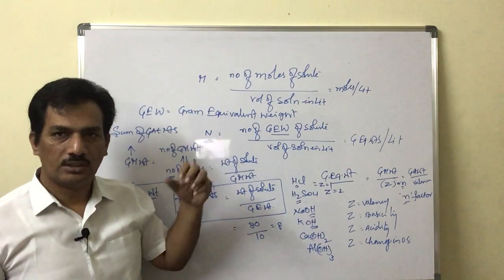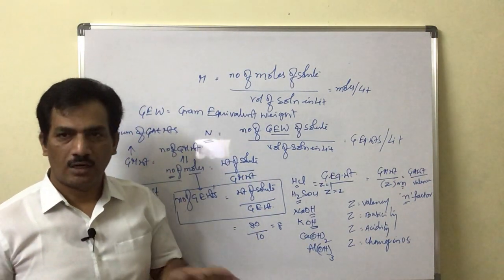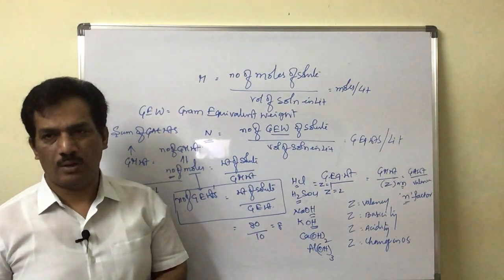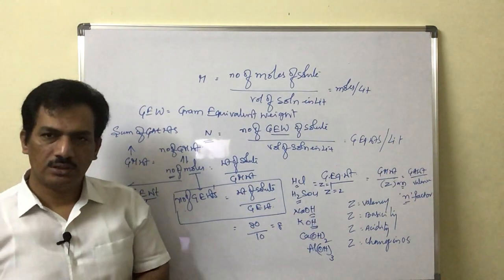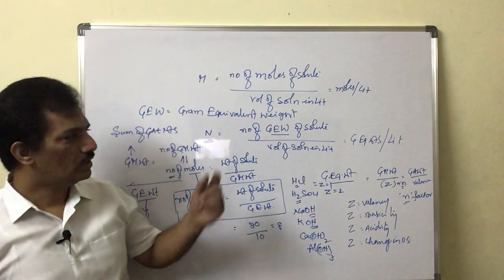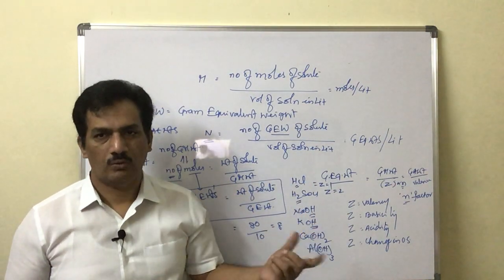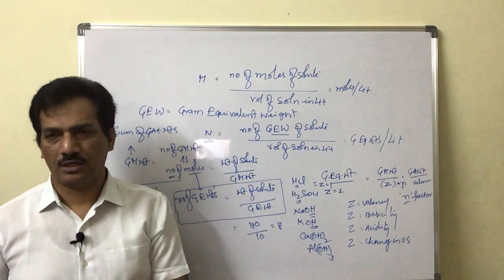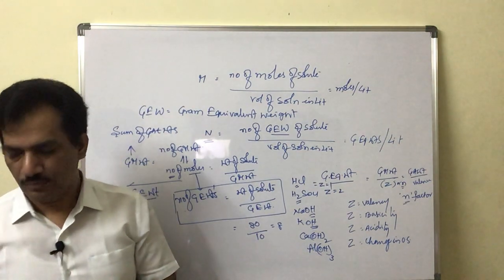In the coming session I will conclude normality and also cover molarity and formality generalizations. We have to discuss what is z, what is n, what is equivalent weight — I gave the introduction here, and we have a lot more to discuss in the coming sessions. Thank you.